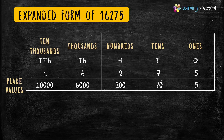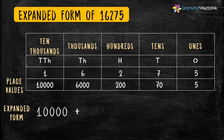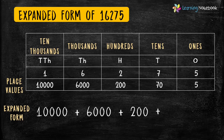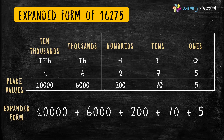Now students, we have found the place value of each digit in the number. So we can easily write the expanded form, which is nothing but the sum of the place values of each digit. The expanded form is: 10,000 plus 6,000 plus 200 plus 70 plus 5.